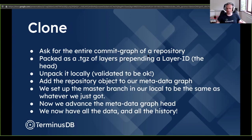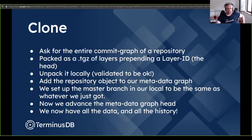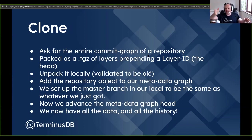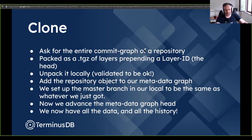We unpack it locally. Once the remote sends it to us, we validate it before fully unpacking — we look inside and make sure all those layer references are reasonable, then spit it out into the layer store. Then we add the repository object to our metadata graph saying we now have a remote, here's its head. We set up the master branch in our local to be the same as what we received, copy the information from the remote's head into our own local commit graph, then advance the metadata graph head so it now points to the remote with all appropriate layer IDs updated.